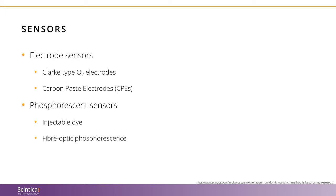Carbon paste electrodes work similarly to the Clark by creating an electrical current, but these sensors use a graphite silicone paste mixture that interacts directly with tissue of interest to generate the current. Compared to the Clark-type electrodes, CPEs are less sensitive to temperature at the measurement site. With phosphorescent sensors, oxygen efficiently quenches the fluorescence and phosphorescence of certain luminophores, a process also known as dynamic fluorescence quenching. This quenching process is based on the principle that molecular dissolved oxygen in tissues or fluids can terminate or quench light emitted by a fluorescent compound dye. The extent of quenching is directly proportional to the partial pressure of oxygen in the vicinity of the dye.